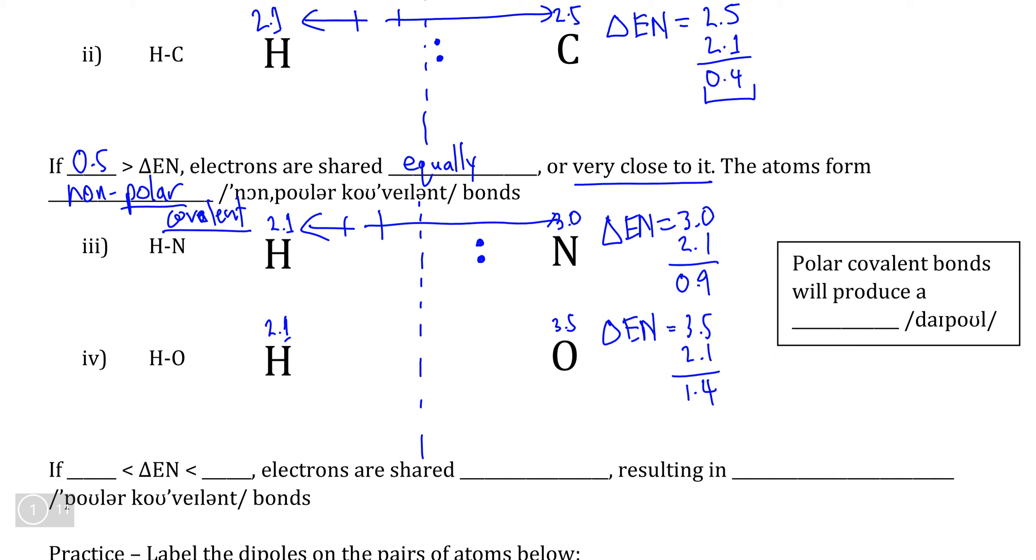Now, because oxygen has an even higher electronegativity constant than even nitrogen, its delta EN value is going to be even larger. 3.5 minus 2.1 comes to 1.4, which is quite large. So here, oxygen is going to pull the electrons in the bond even closer to it than nitrogen is able to, resulting in the electrons maybe being over here closer to oxygen than nitrogen was able to go.